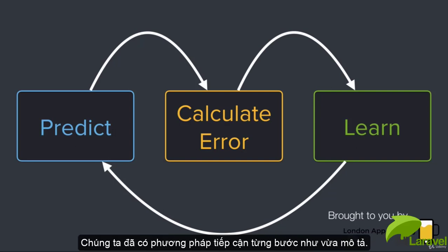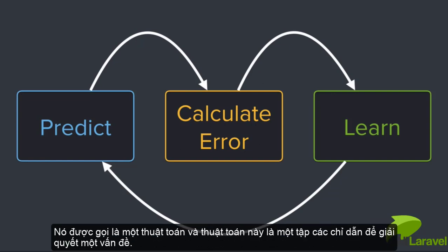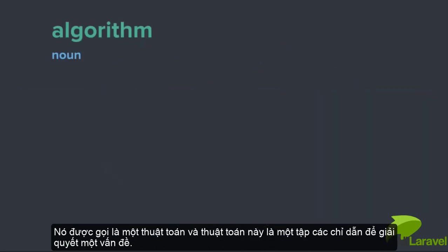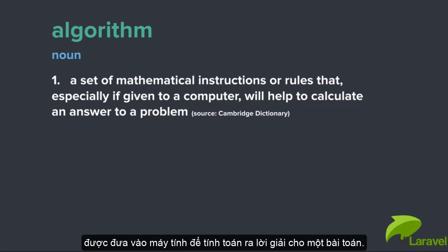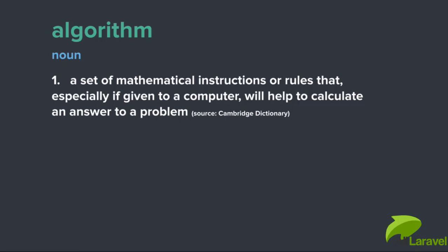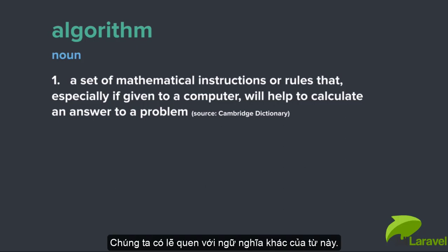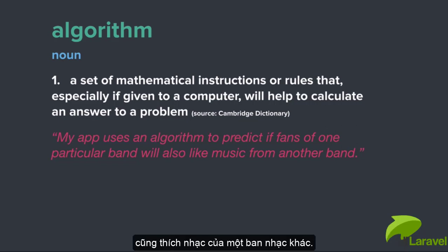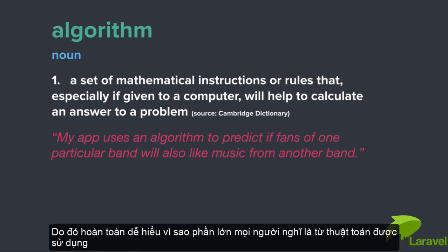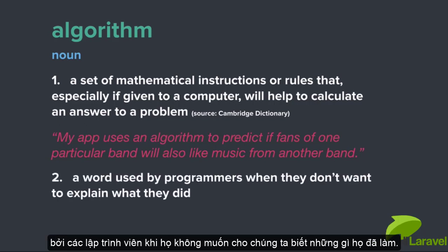Now, there's actually a name for this kind of step-by-step approach that we just described. This is called an algorithm. An algorithm is a set of instructions for solving a problem. The Cambridge Dictionary defines an algorithm as a set of mathematical instructions or rules that, especially if given to a computer, will help calculate an answer to a problem. You know, the thing is, you and I are probably more familiar with a different usage of this word, right? Having heard sentences like, my app uses an algorithm to predict if fans of one particular band will also like music from another band. So it's perfectly understandable that most people think that the word algorithm is actually a word used by programmers when they don't want to explain what they did.